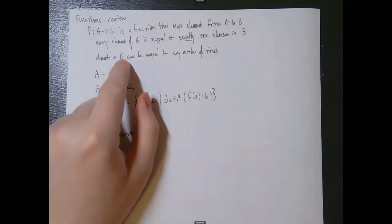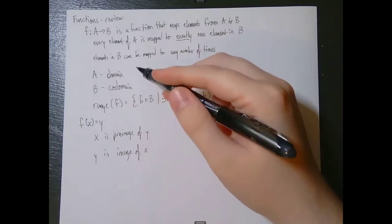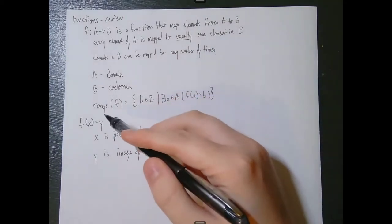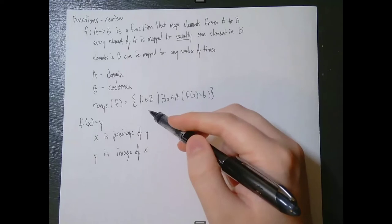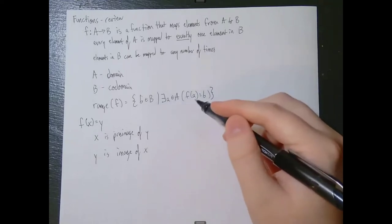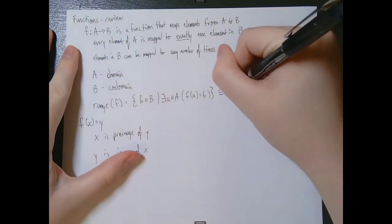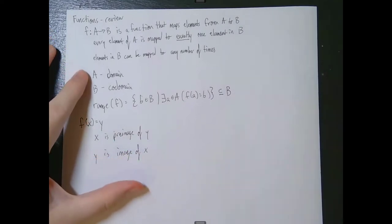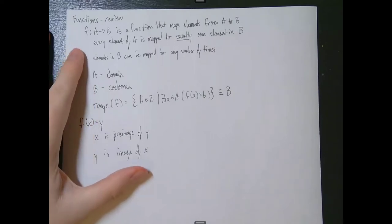However, elements in our codomain B can be mapped to any number of times. It's possible for an element in the codomain to be mapped to zero times, one time, two times, et cetera. We have our domain, our codomain, and a definition for the range of f, which equals all elements b in the codomain such that there exists an a in the domain such that f(a) equals b. The range of f is a subset of our codomain B.